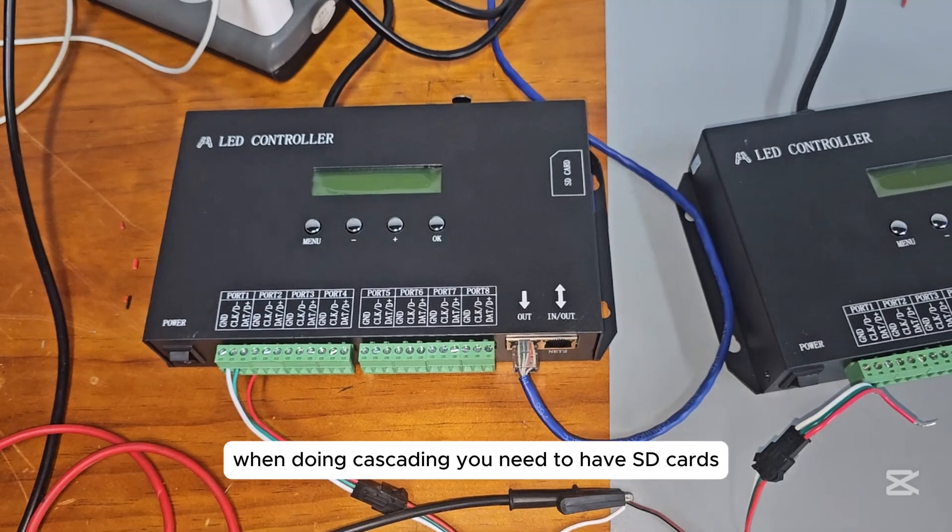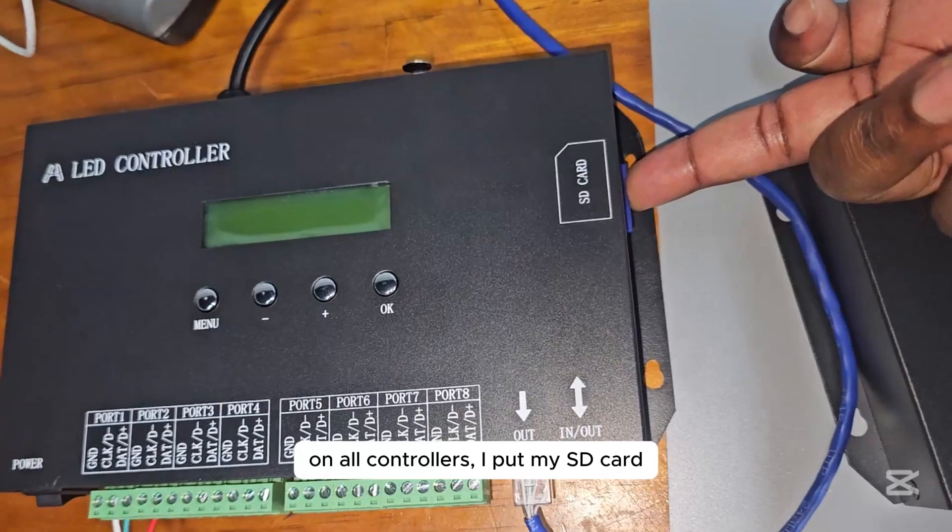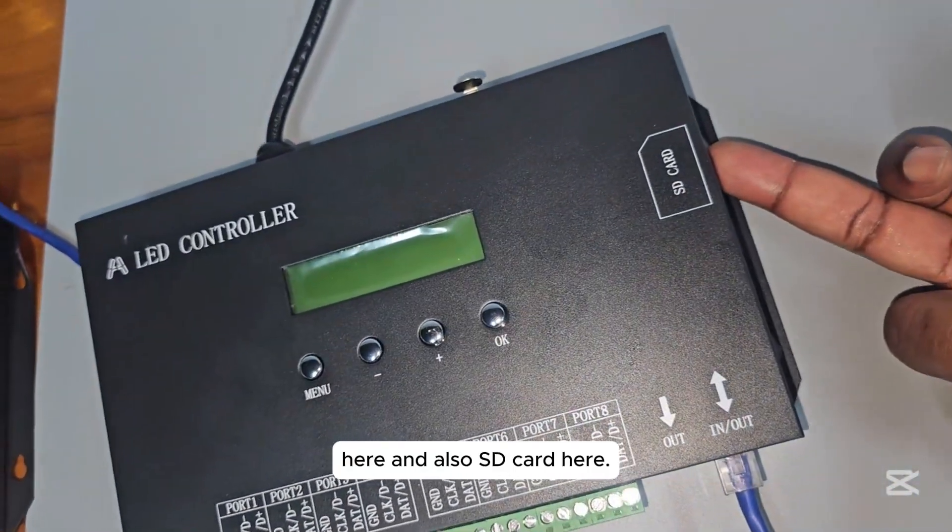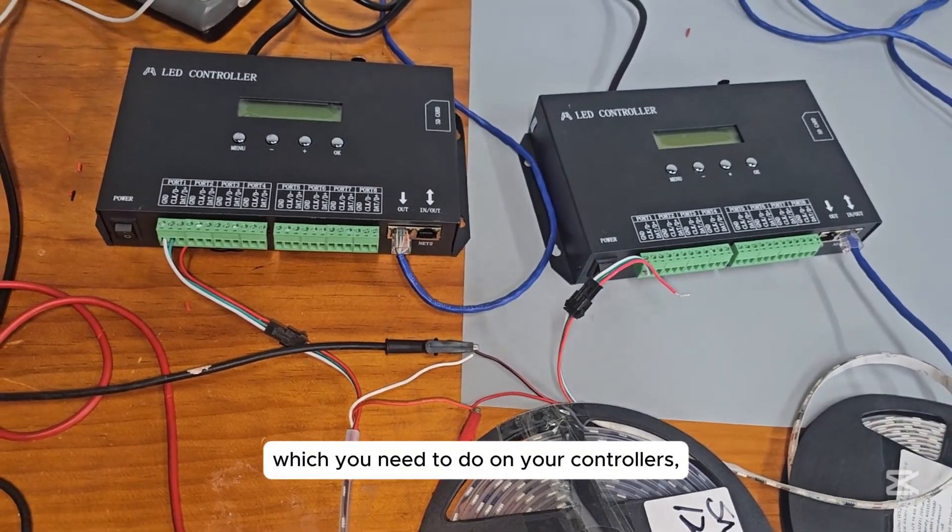When doing cascading you need to have SD cards on all controllers. So I put my SD card here and also SD card here. Let me switch on the controllers and show you the settings which you need to do on your controllers.